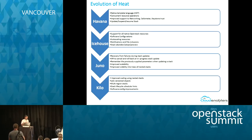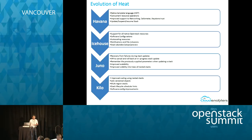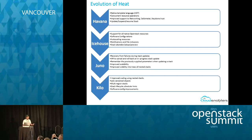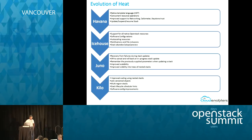Looking at the evolution of HEAT: it started in Grizzly as an incubated project to support CloudFormation templates in OpenStack. In Havana, the HOT template was introduced, along with stack resources and lifecycle management. In Icehouse, features were extended to support software configuration, auto-scaling, notifications and alerts, and abandoning stacks. In Juno, recovery of resources and improved scalability and visibility were added. In Kilo, key features include multi-region stack, software configuration improvements, and Oslo versioned objects.